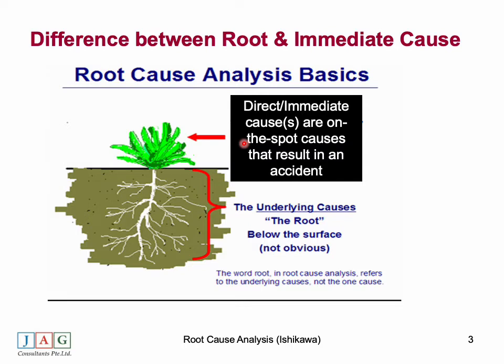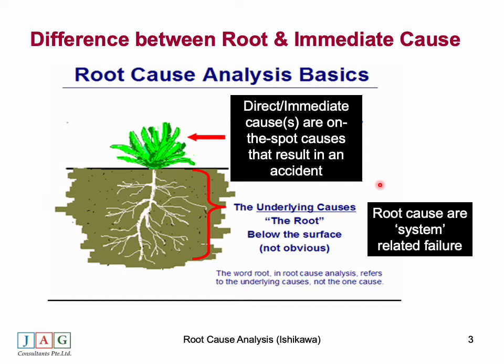Addressing human error as the immediate or direct cause will address only that ship and only for the seafarers on board at that time. The possibility of such an accident repeating on the same vessel at a later date, or on other vessels in the fleet, still exists — because only the symptom of human error has been addressed and not the root cause. To assess the root cause we need to dive further down.